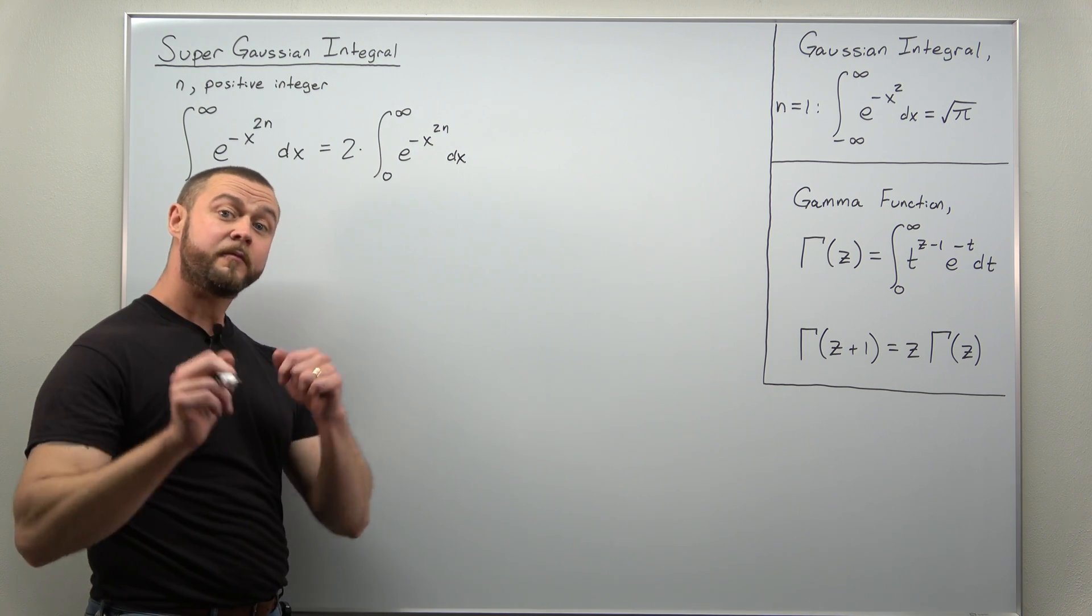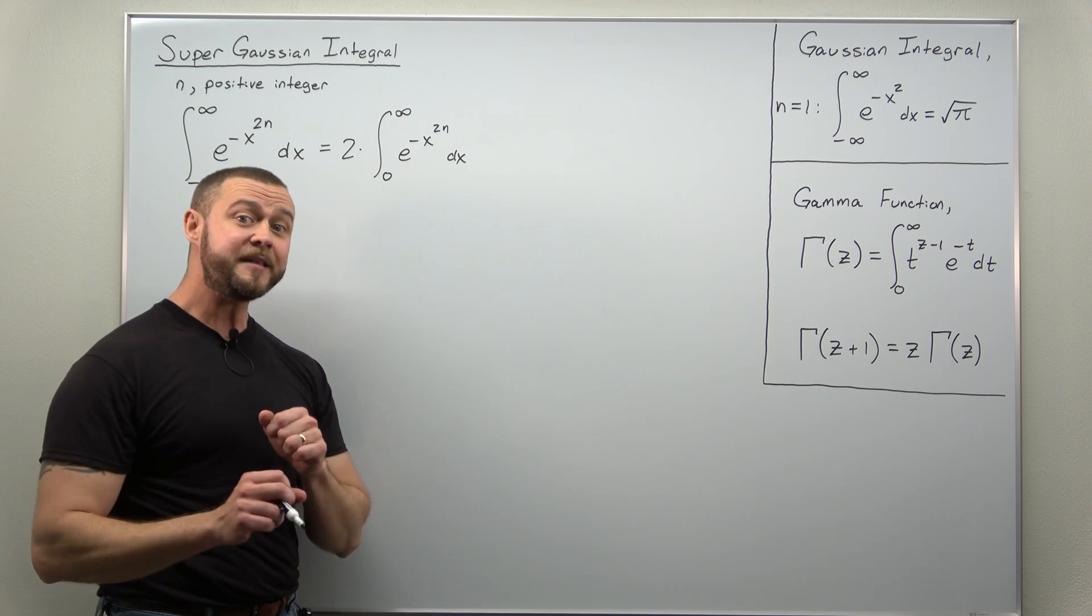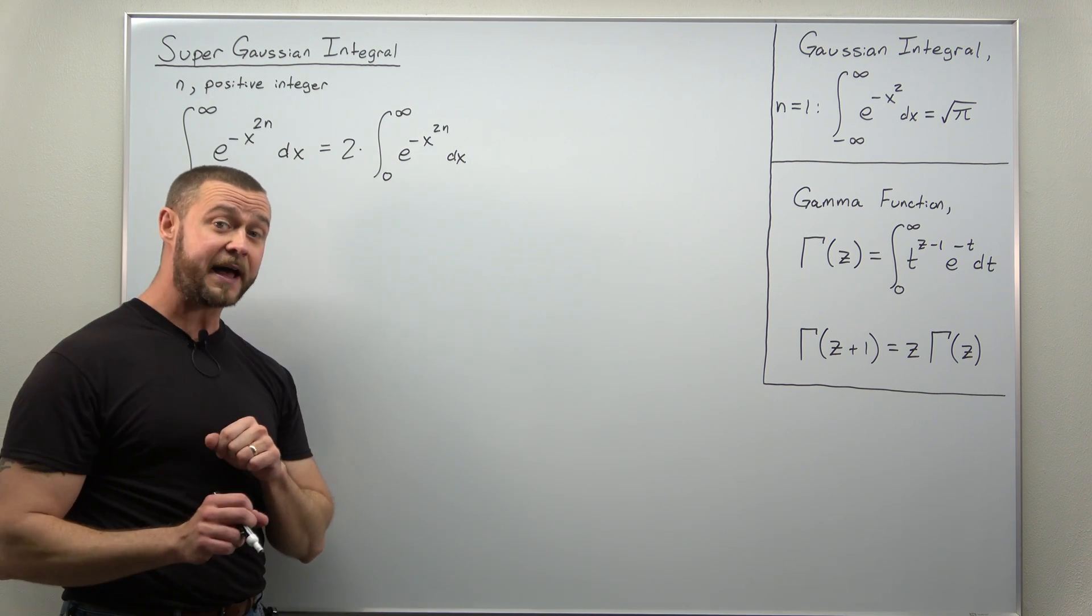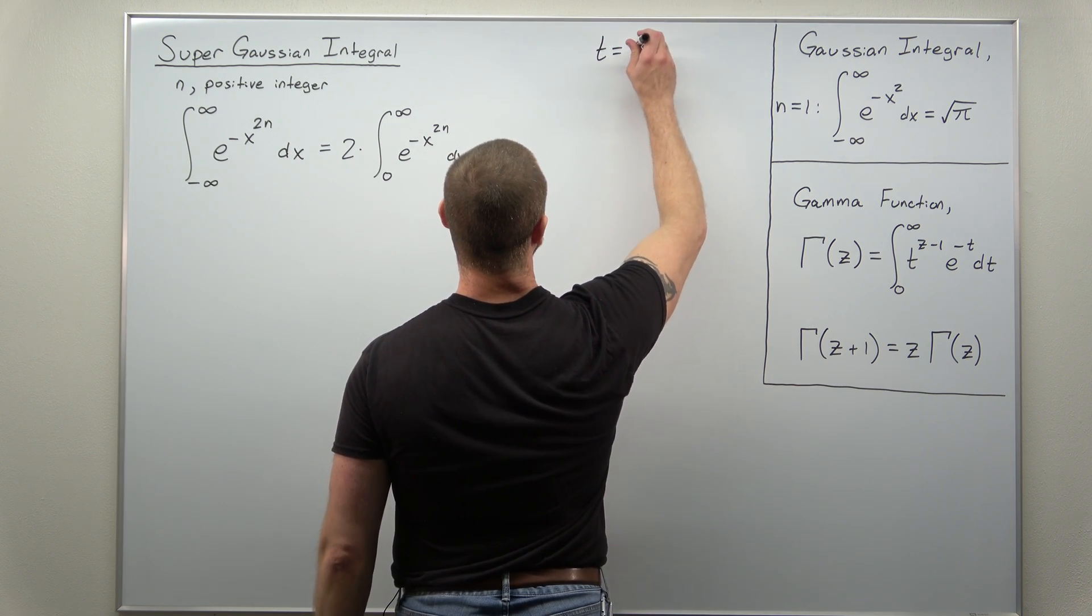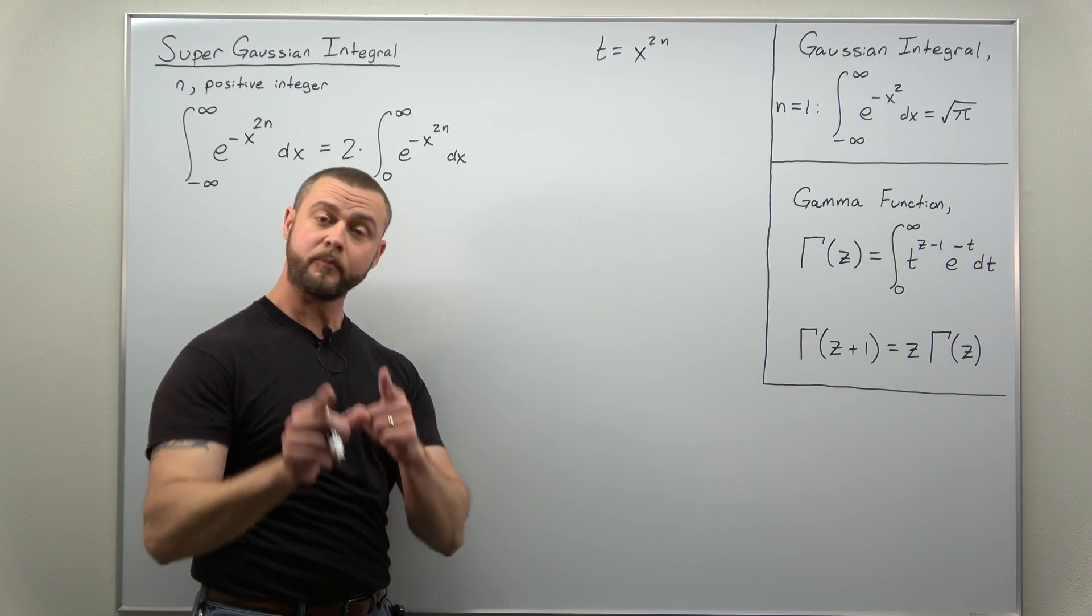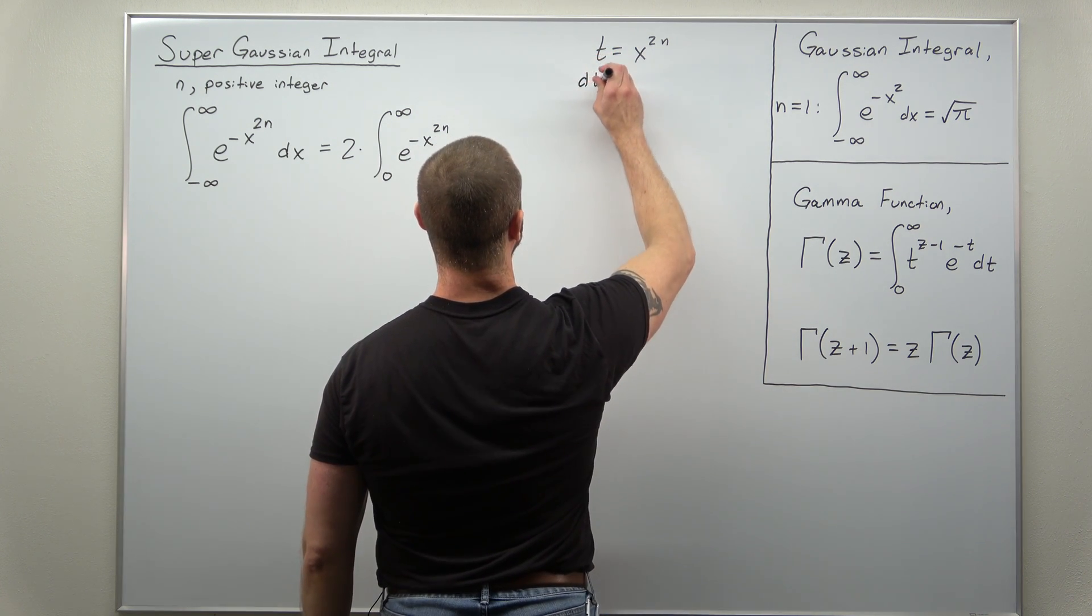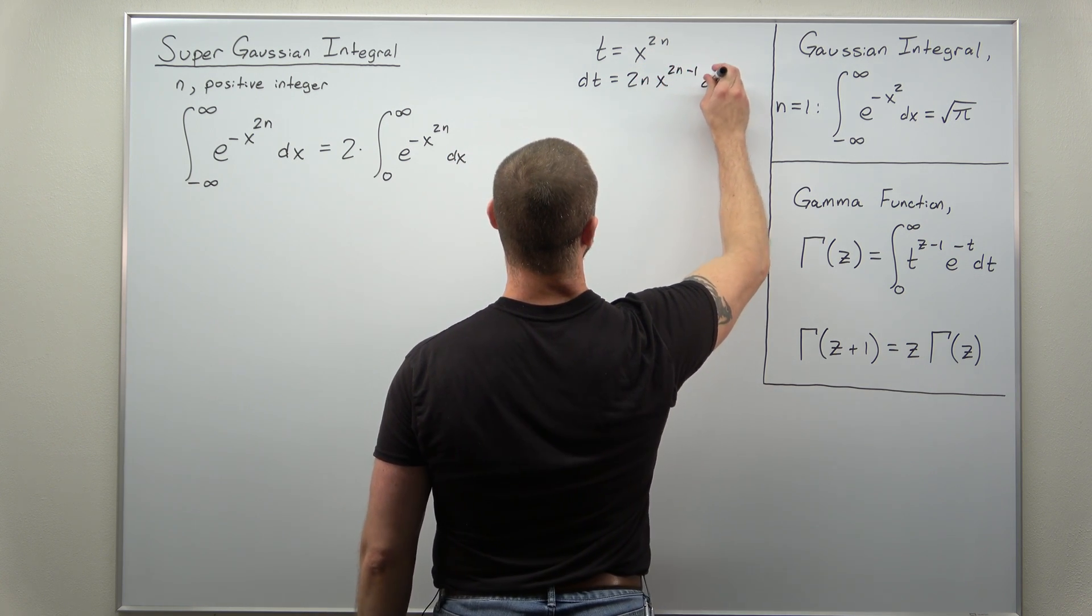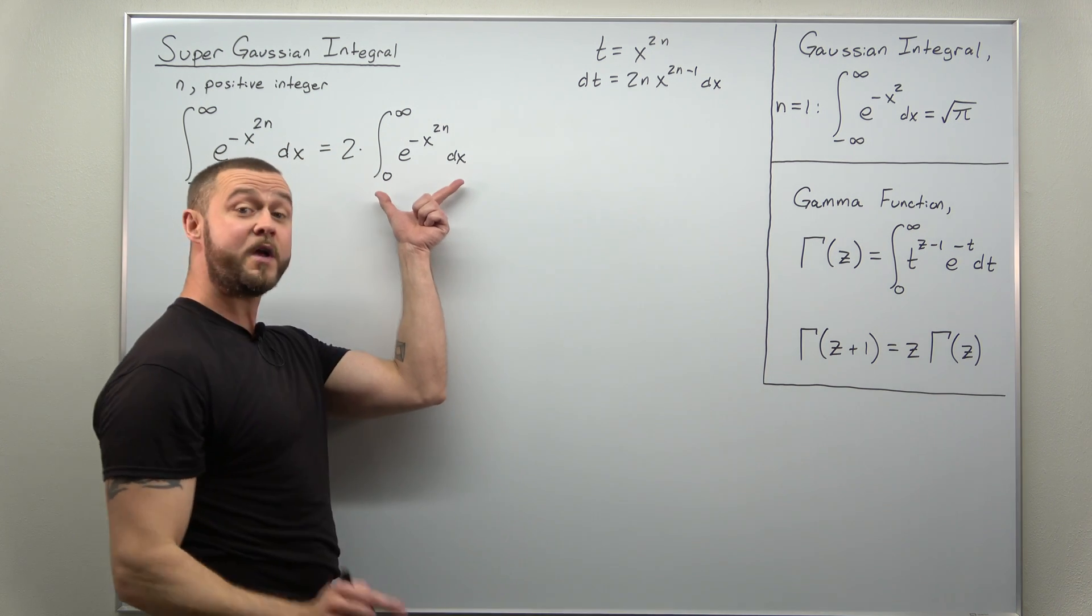At this point, the integral that we're left with, we seem kind of stuck. There's not much that we can do with it, but we might be tempted to try a substitution in the form t equals that power of x. So let's try a substitution in the form t equals x raised to the 2n power. We're going to calculate the differential, so just apply the power rule.